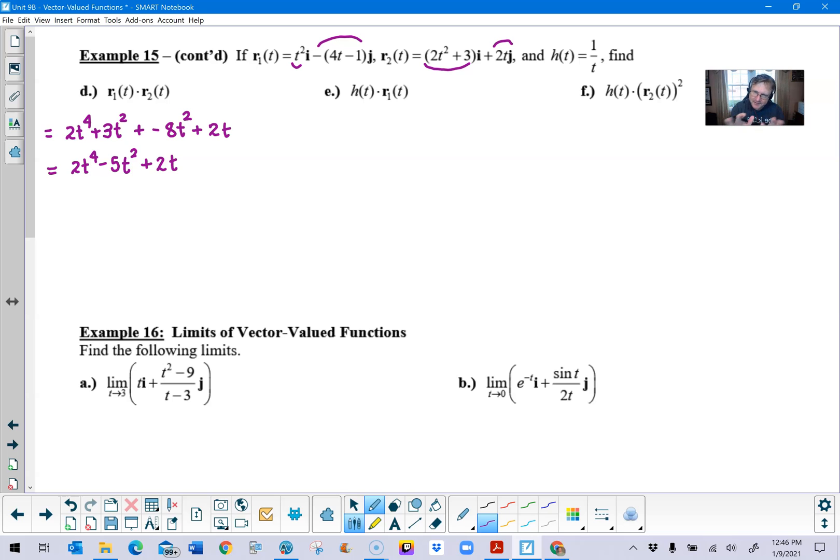Part e, on the other hand, will be a vector. Why? Well, in this case, we have a function h of t, which is 1 over t being multiplied by our vector value function r1. So if you can think about this h of t expression, 1 over t, distributing through each of these parts of that vector value function. So 1 over t times t squared is, of course, t. You would retain the i with that. And then I'll just keep my subtraction in there. And then multiplying 1 over t gives me the quantity 4 minus 1 over t. And then I just throw my j in. And that would be your result.